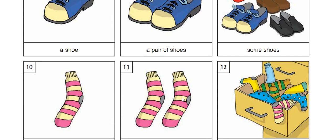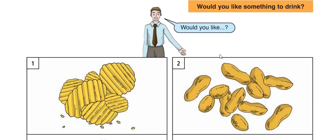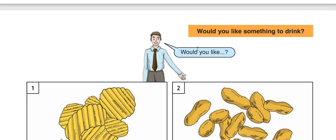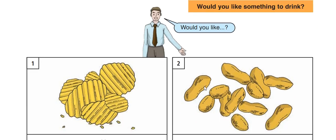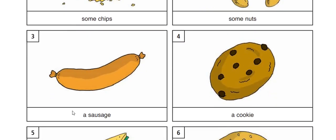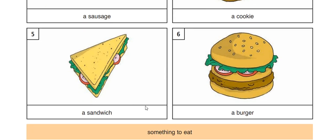These are things we use the word 'pair' for. Would you like some chips? Would you like some nuts? Would you like some sausages? Would you like some cookies? Would you like a sandwich? Would you like a burger?